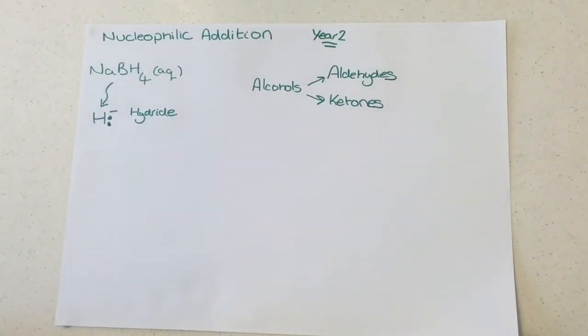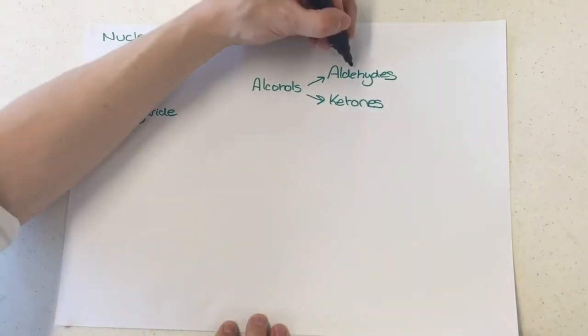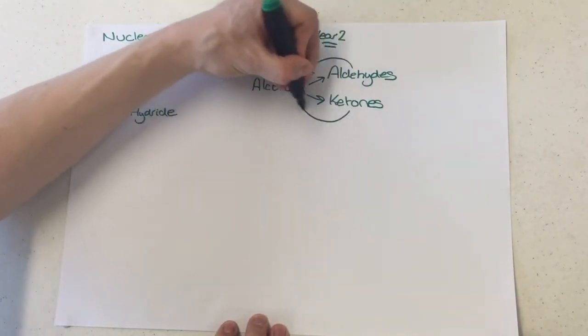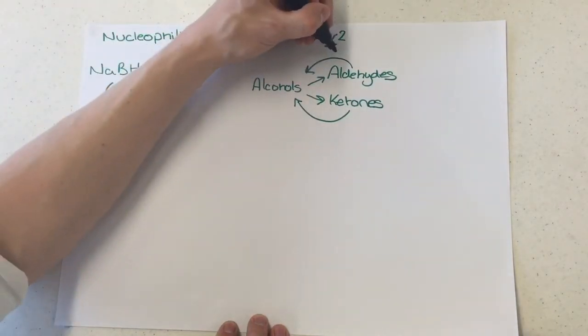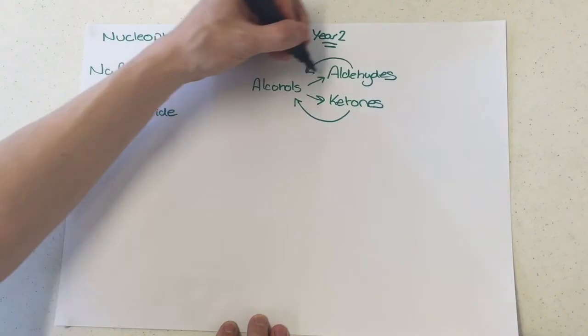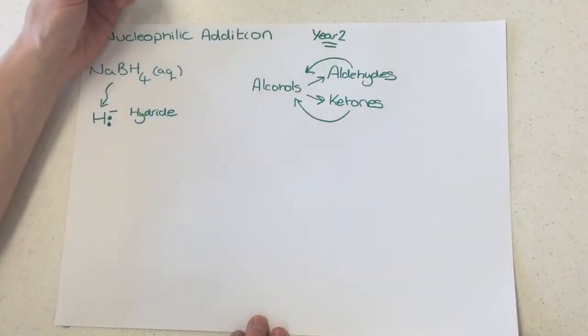And when you get to upper sixth, you do a little bit more synthetic route work, and so what you need to be able to do is actually go back in the other direction. And that's what this is all about. We can use the nucleophilic addition mechanism to perform a reduction, going back in the other direction here, to form the alcohol which made these aldehydes and ketones respectively.